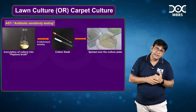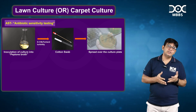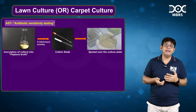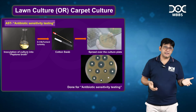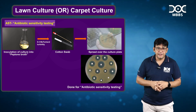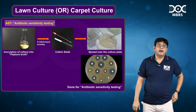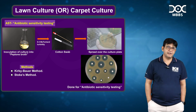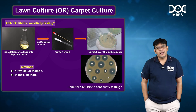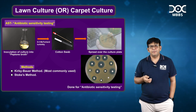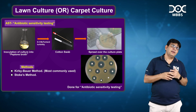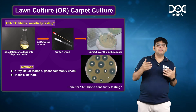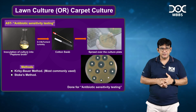You take the 0.5 McFarland turbidity standard, dip the cotton swab into it, and spread it over the culture plate — this is termed as lawn culture or carpet culture, used for AST, which is antibiotic sensitivity testing. This is done by either the Kirby-Bauer or Stokes method. Kirby-Bauer is mostly used because it is less costly, whereas the Stokes method uses controls and is considered better, but Kirby-Bauer is what is predominantly used.